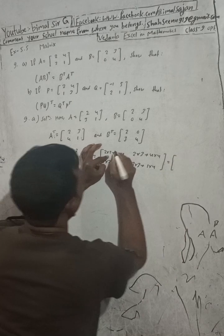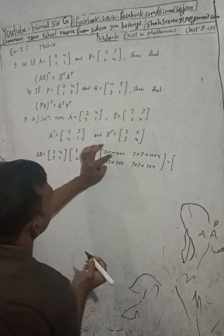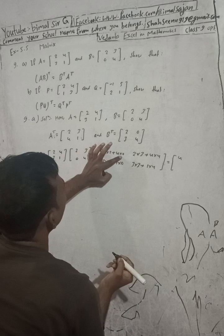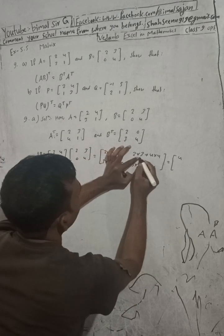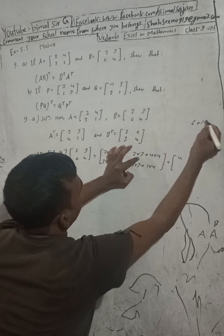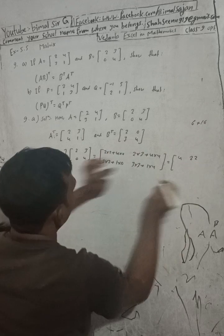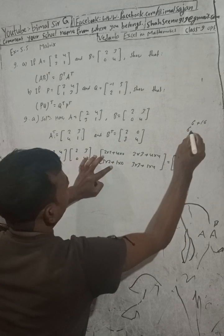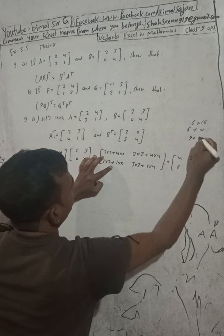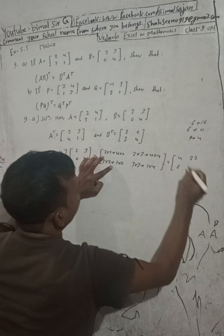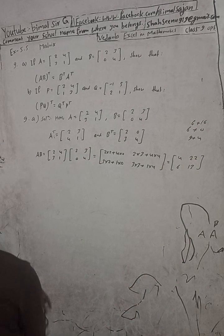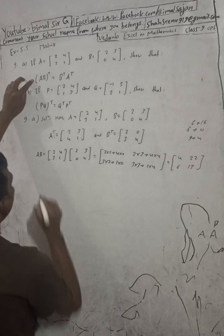Computing the values: 2×2 = 4, plus 4×0 = 0, giving 4. Then 2×3 = 6, plus 4×4 = 16, giving 22. Then 3×2 = 6, plus 1×0 = 0, giving 6. Then 3×3 = 9, plus 1×4 = 4, giving 13. So AB = [4,22; 6,13].